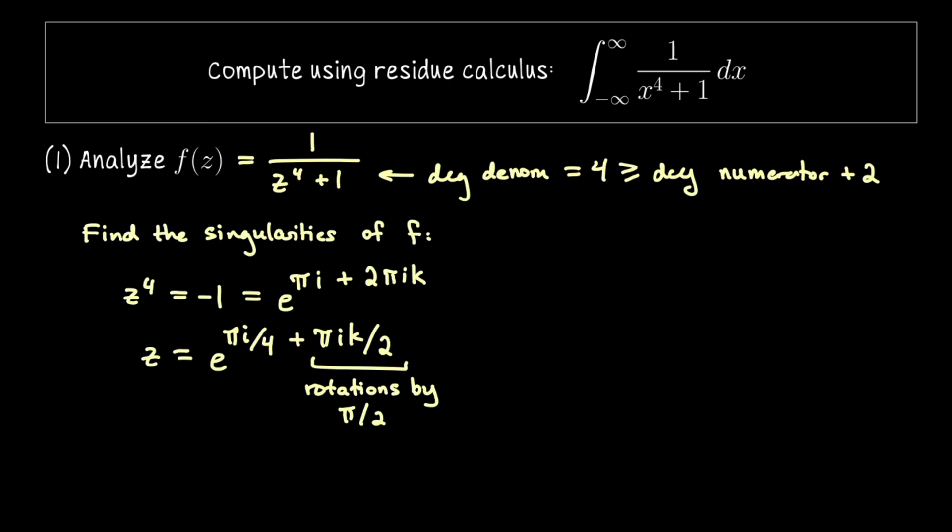Rotating by pi over 2 four times returns you back to where you started so the solutions to this equation that we're looking to solve z to the fourth equals negative 1 are going to correspond to this index k being 0, 1, 2, or 3. So that will give us four distinct solutions.